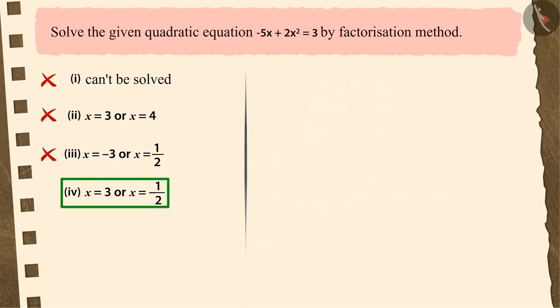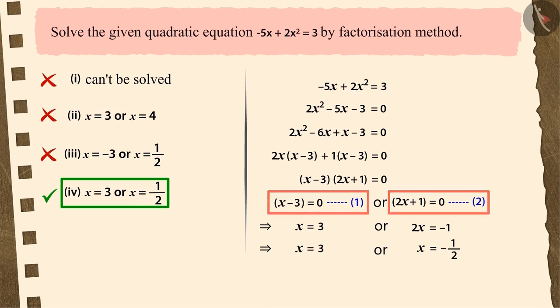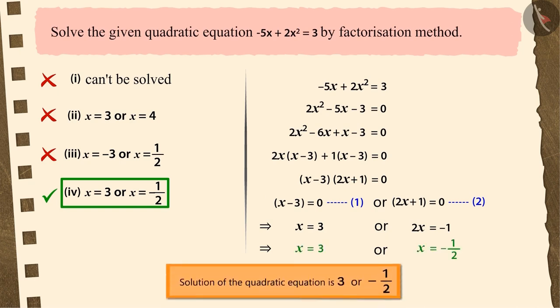If you chose option 4, then it's the correct answer. Putting each linear factor of this quadratic equation equal to 0, and changing the signs while solving equations 1 and 2. On solving it, we get a unique solution for the quadratic equation.